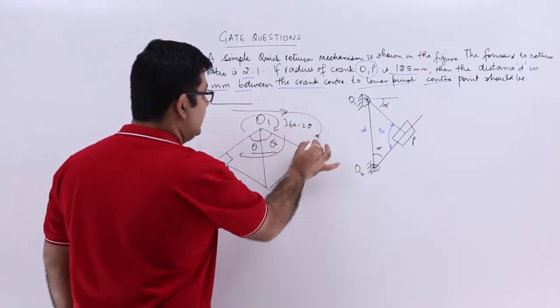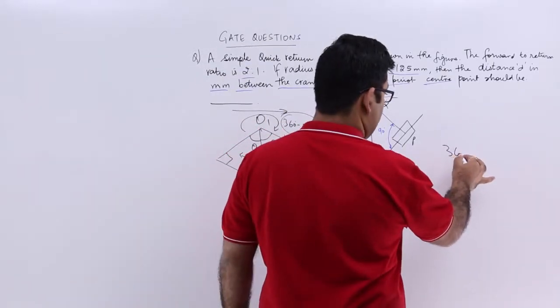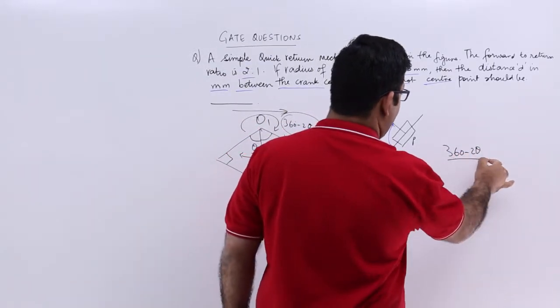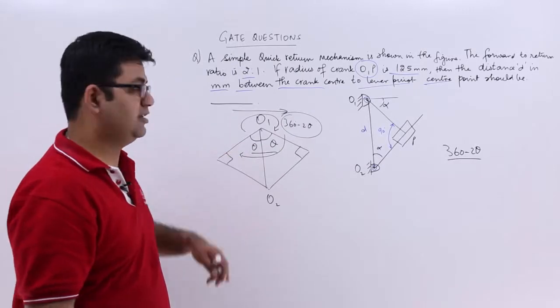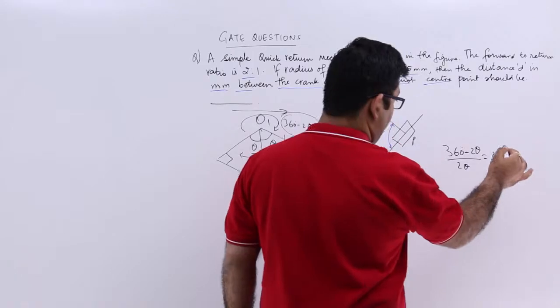So the angle turned in the forward direction is 360 minus 2 theta. And the angle turned in the reverse direction is 2 theta is equal to 2 is to 1.